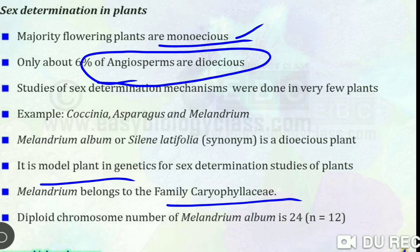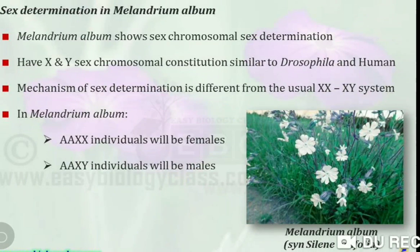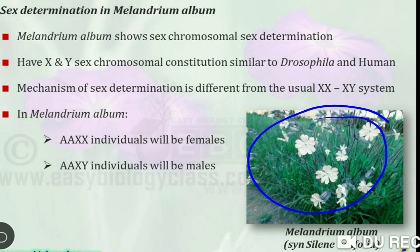Melandrium belongs to the family Caryophyllaceae. The diploid chromosome number of Melandrium album is 2N = 24, so N = 12. Then, sex chromosomal sex determination: Melandrium album has X and Y sex chromosomal constitution similar to Drosophila and humans. Like in humans, X and Y are the sex chromosomes, and Drosophila is the same.